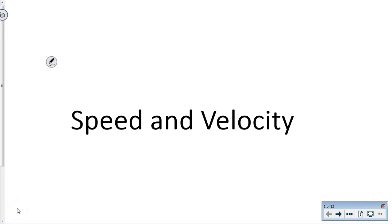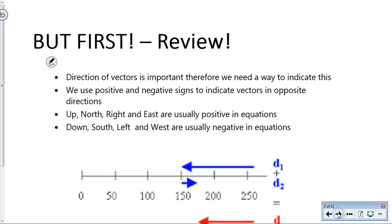Welcome to speed and velocity, but first a review. Directions of vectors are important in Science 10 and Physics. Everything moves like it's on train tracks—it can go one way or the other. One direction is always positive, the other always negative. By convention, up, north, right, and east are usually positive; down, south, left, and west are usually negative in equations.